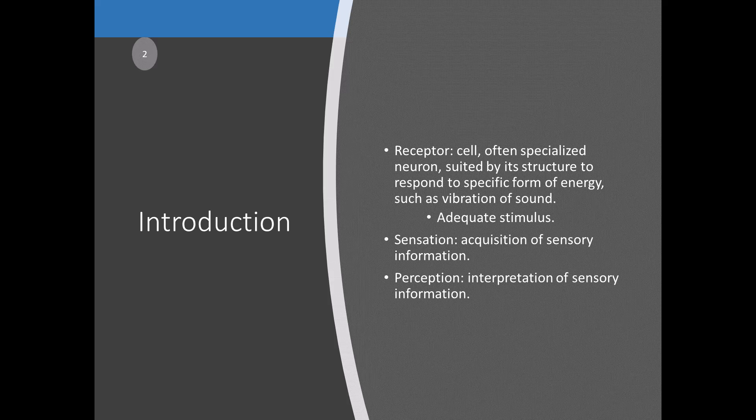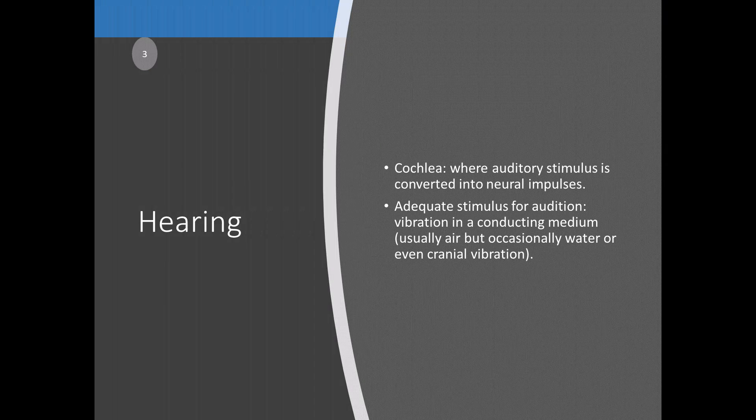The auditory mechanism is less complex than vision and other sensory mechanisms, but it is nonetheless a complicated system of sensation. The cochlea is an important part of our auditory mechanism — this is where the auditory stimulus is converted into neural impulses. It contains thousands of moving parts.